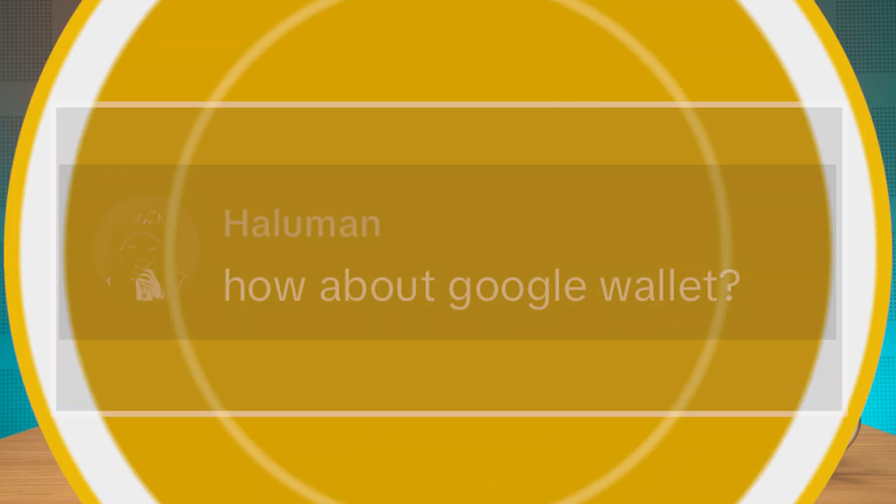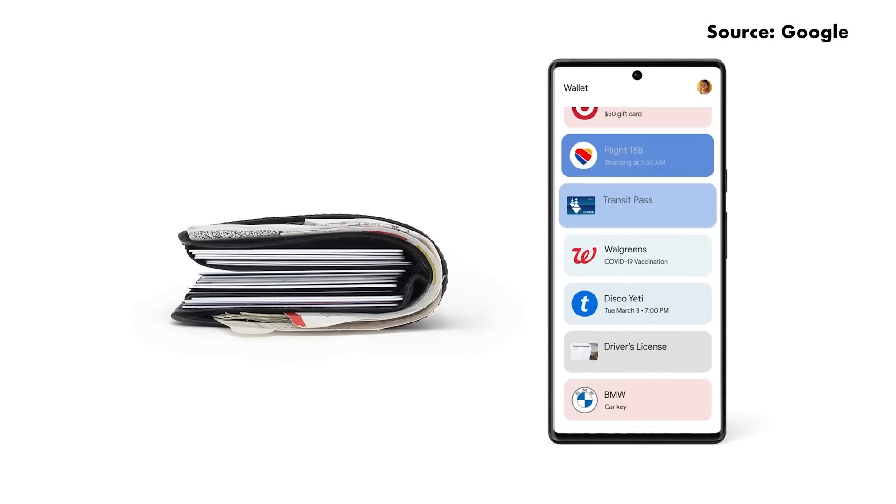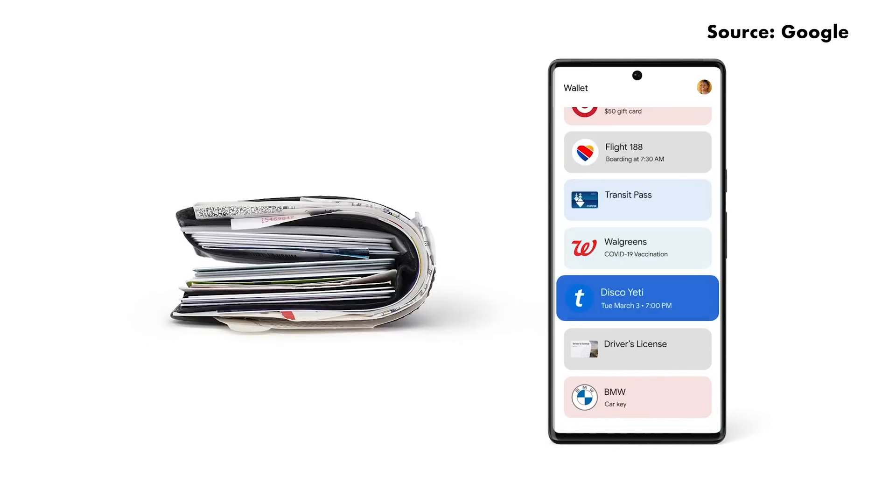Moving on to the next question regarding Google Pay in Malaysia. Google Wallet can store things like boarding passes, health data, loyalty cards, and vaccination certificates, but the question likely refers to the payment feature called Google Pay. Google Pay was recently launched in Malaysia, shortly after Apple Pay. At the moment, only four banks support Google Pay — which is less than the eight banks supported by Samsung Pay, but on par with Apple Pay. The banks are CIMB, Hong Leong, Public Bank, and HSBC.